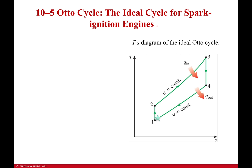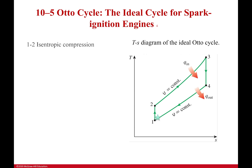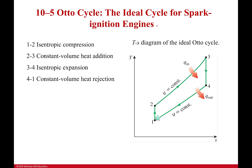Here's a TS diagram of the ideal Otto cycle. I would strongly suggest you make yourself a little dictionary of cycles with their TS and PV diagrams, because the TS diagram is always going to look this shape — knowing which process is constant volume and which is isentropic will help you when doing problems later. Let's look at the four steps: from 1 to 2, isentropic compression; from 2 to 3, constant volume heat addition; from 3 to 4, isentropic expansion; and from 4 to 1, constant volume heat rejection — the same processes we learned about earlier, just now on a TS diagram instead of a PV diagram.